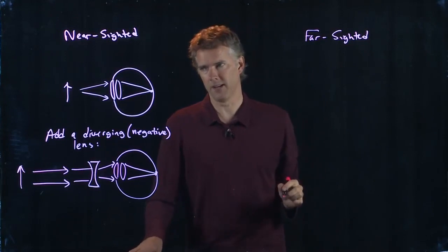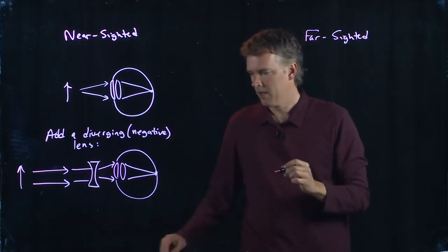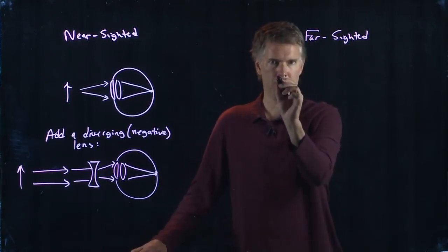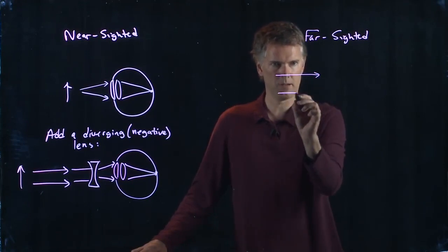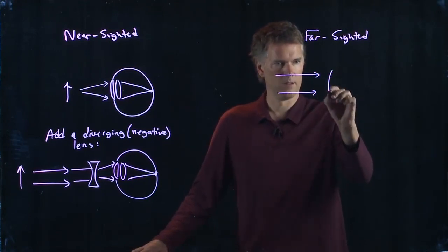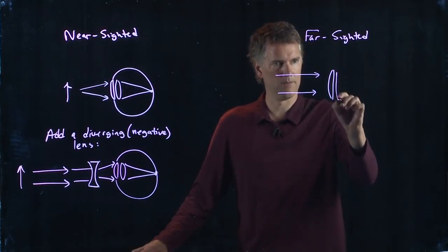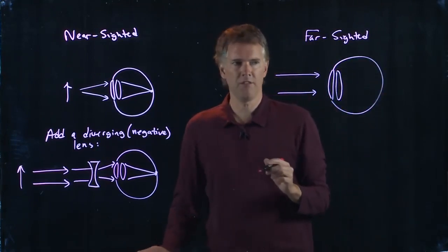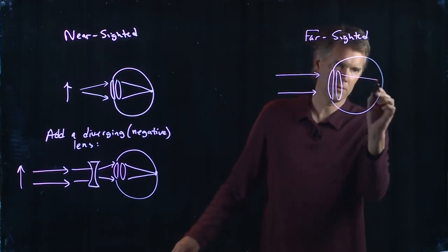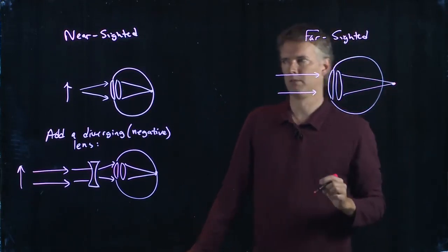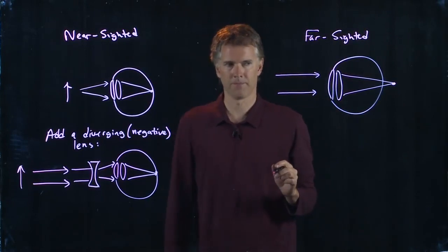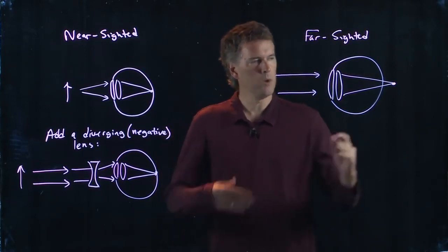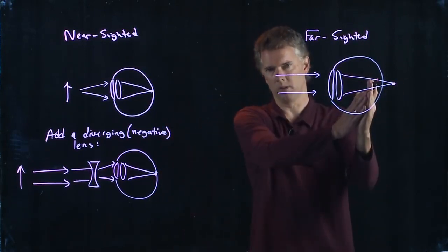If you are farsighted, then you're looking at parallel rays coming in from a distant object. Here is your eyeball. And if you're farsighted, then they don't quite get to a focus right where they should be.